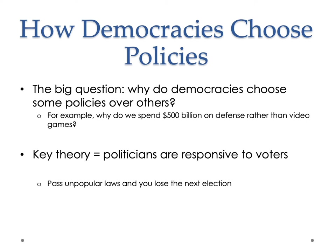One question is how democracies choose policies. If you live in a democratic state, how do policies emerge? For example, we spend 500 billion on defense rather than, say, video games — we could spend 500 billion on video games. Why do we spend 500 billion on defense? The central theory — one we will both support and challenge — is that politicians are responsive to voters. If you pass unpopular laws, you will lose the next election. So what are popular policies right now, and what are unpopular policies that continue to exist?